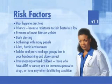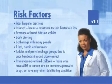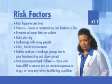What are the risk factors for Impetigo? Poor hygiene practices, infancy because resistance to skin bacteria is low, the presence of insect bites or scabies, body piercing, gatherings with many people, a hot humid environment, toddler and preschool age groups due to poor hand washing and close contact, and immunocompromised children — those who have AIDS or cancer, are on immunosuppressive drugs, or have other debilitating conditions.